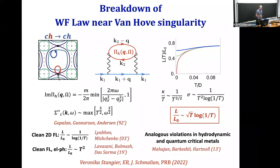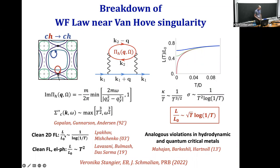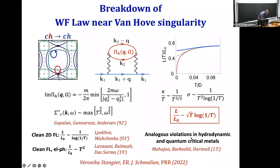Similar effects were actually predicted in a variety of situations where there is a source of very strong inelastic scattering involving small momentum transfer. Examples include an ordinary 2D Fermi liquid — where there is also an expected violation of the Wiedemann-Franz law, but only logarithmic — and also hydrodynamic metals or metals close to specific quantum critical points, which are all expected to have similar violations of the Wiedemann-Franz law.